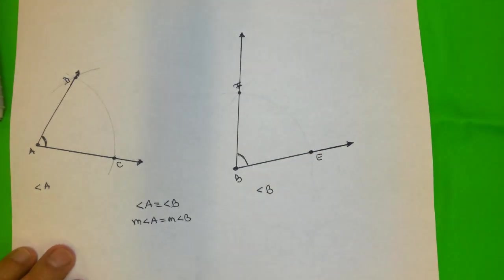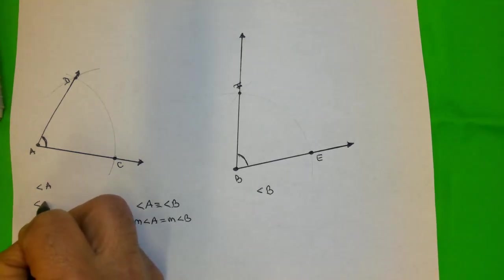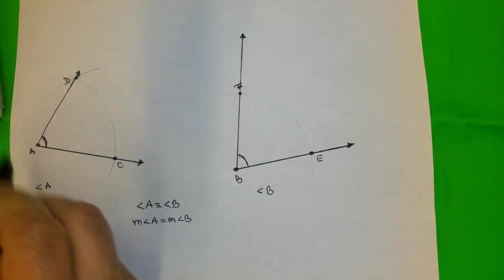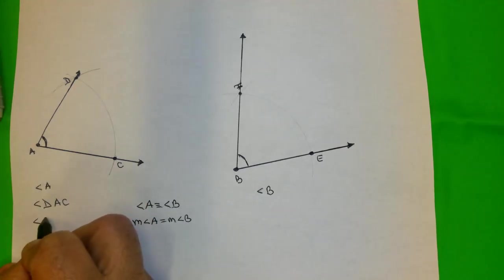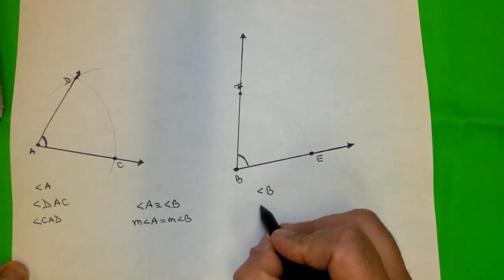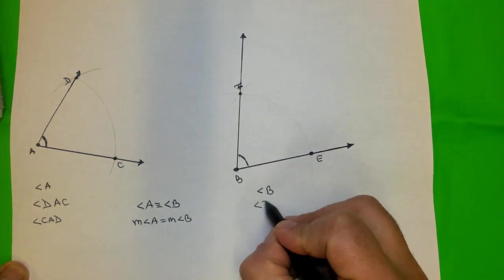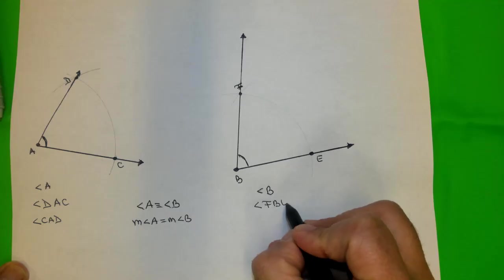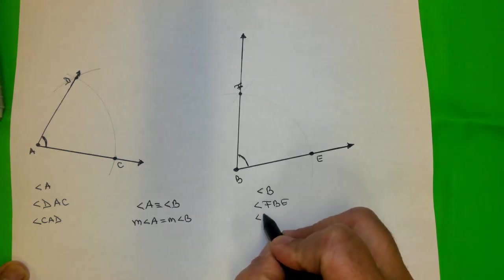One more thing. You can call angles. Very important to remember that also. Using three letters, like DAC, will be the same thing. Or CAD. The same for this angle. You can call it angle FBE. Or angle EBF is the same thing.